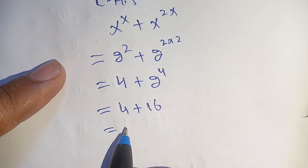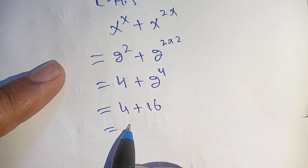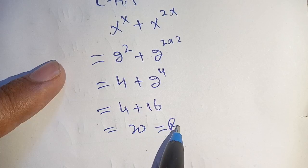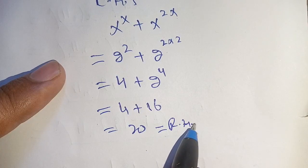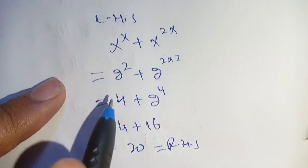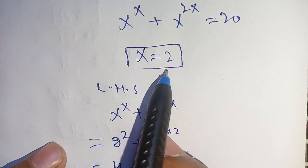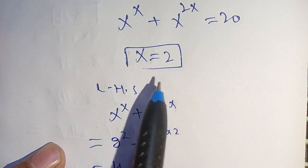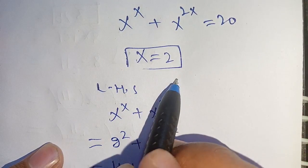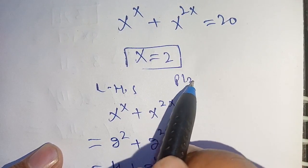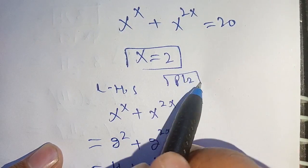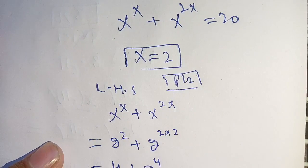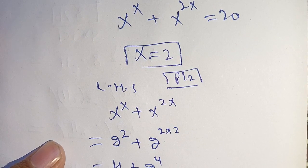16 plus 4 becomes 20, and it is equal to the right-hand side. Thus x is equal to 2 satisfies our equation. If you found this helpful, make sure that you subscribe to the channel for more informative videos. See you in the next video, till then bye bye.